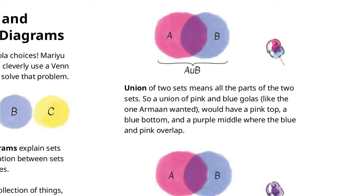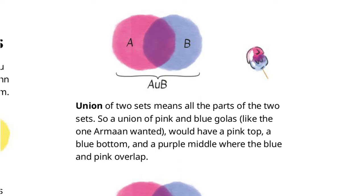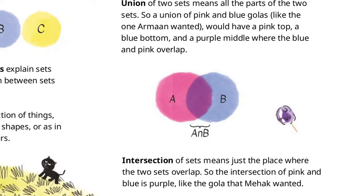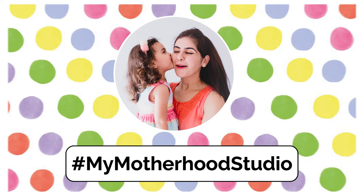And what is an intersection? The intersection of sets means just the place where the two sets overlap. So the intersection of pink and blue is purple — like the gola that Mehek wanted. I hope you all enjoyed today's story!